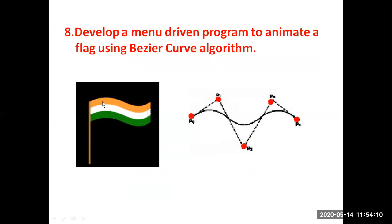You can see the flag with orange, white, and green, and the flag is being hoisted with a pole. We will see how to construct this flag using a Bezier curve algorithm. This flag can be designed with a waveform of curve, which is very easily obtained using the Bezier curve.